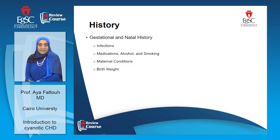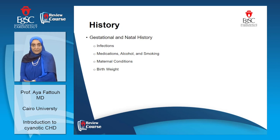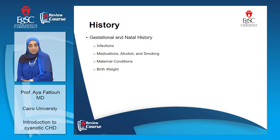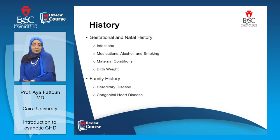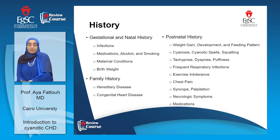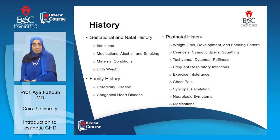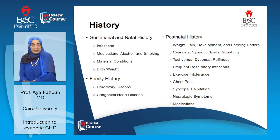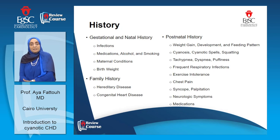Don't forget the history — basics are basics. The history can give you a lot of information. Ask about the perinatal and gestational history, about the mother, whether she took any medication or was exposed to infection, and family history — are there other babies with congenital heart disease or hereditary diseases? Postnatal history: birth weight, feeding habits, weight gain, presence or attacks of cyanosis. If the child is older, ask about the possibility of chest pain, palpitations, and history of syncope. All these are very important clues.